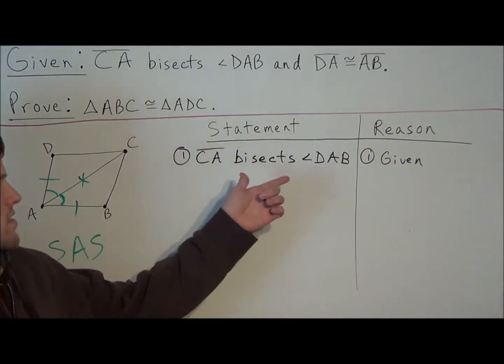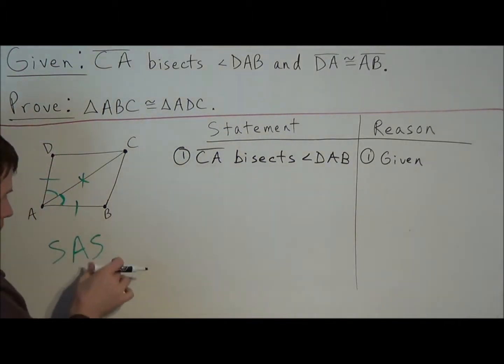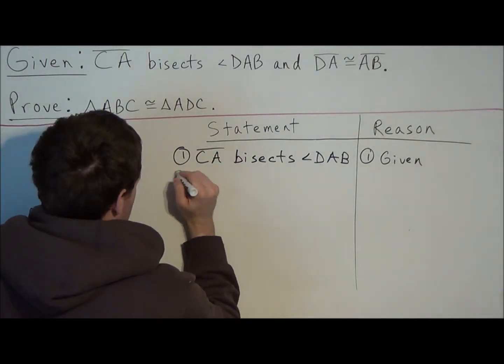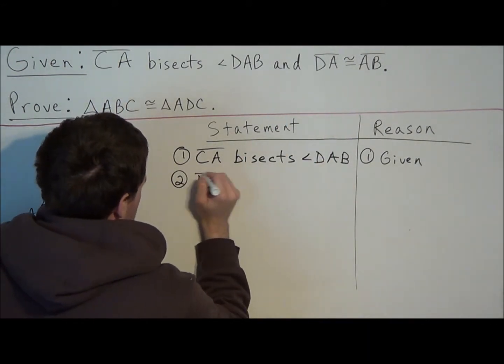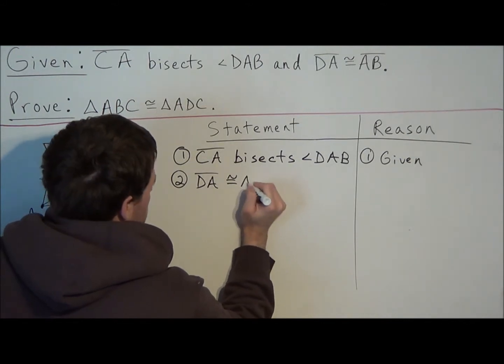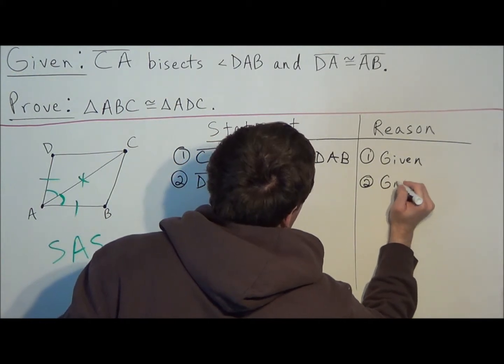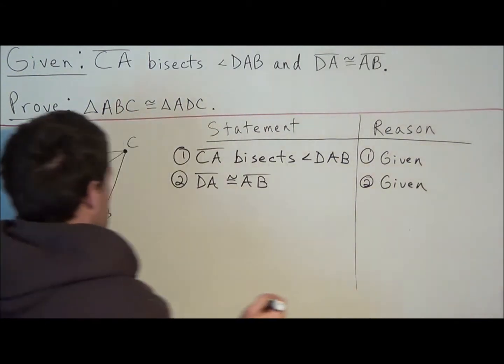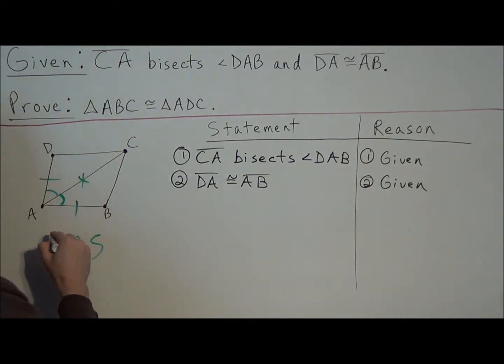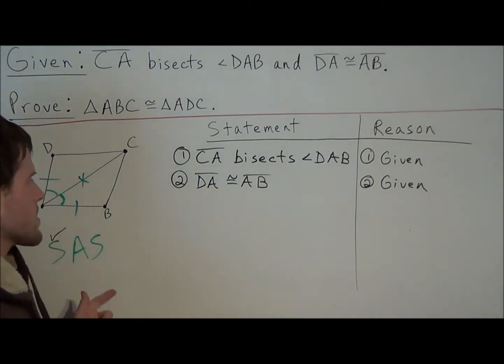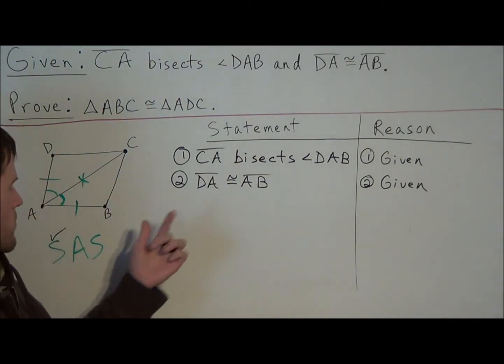But notice when we made this statement, we did not establish any pairs of congruent sides or angles. So we still have a bit more to write. But now we can write the second piece of given information. We're told that line segment DA is congruent to line segment AB. And the reason why this is true, once again, this was also given to us. So notice because we established a pair of congruent sides, we can check this off because this tells us that we've established one key piece of information.